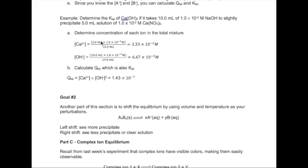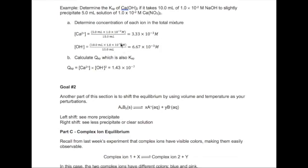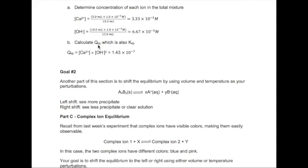For calcium, just take the 5 milliliters times 10 to the minus 2 divided by the total, which gives us 3.33 times 10 to the minus 3 molar. Using a similar procedure, we get for hydroxide, 6.67 times 10 to the minus 3 molar. Now we calculate the Ksp, which is just given by calcium concentration times hydroxide concentration squared, giving us 1.43 times 10 to the minus 7, and that would be also our Ksp.